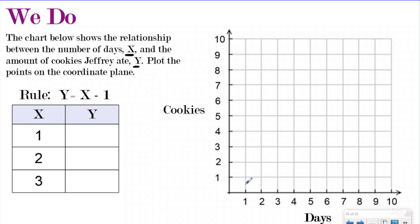It says the chart below shows the relationship between the number of days X and the amount of cookies Jeffrey ate Y. What that means is our X axis is going to be the amount of days. That's why it said comma X. It's called a appositive, which is a literary term, which means they put a comma and then describe the word. You're welcome reading teachers. One way you can solve context of those questions. And so our X is going to represent the days and then our Y is going to represent the amount of cookies.